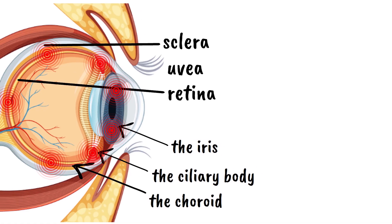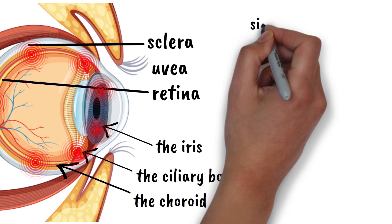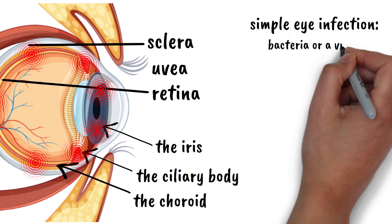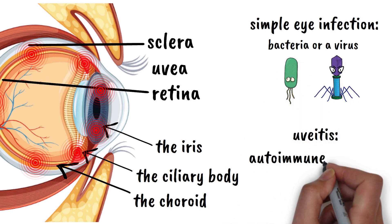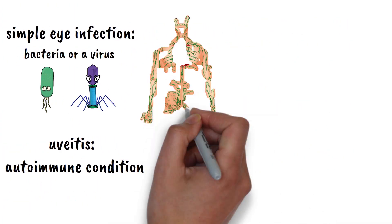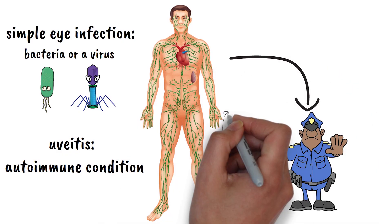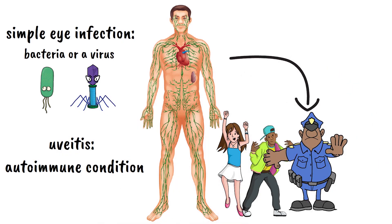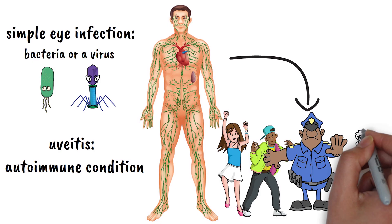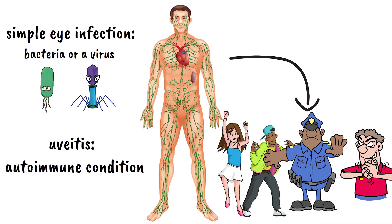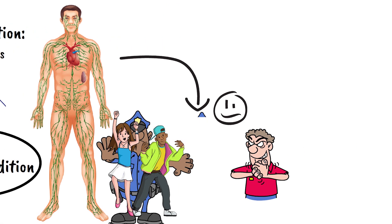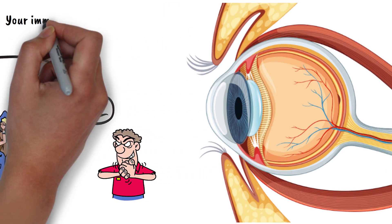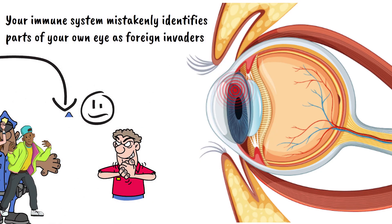Here's where uveitis gets particularly interesting and complex. Unlike a simple eye infection that might be caused by bacteria or a virus, uveitis is often what we call an autoimmune condition. Imagine your body's immune system as an overzealous security guard at a concert — normally doing a great job keeping troublemakers out, but sometimes getting confused and attacking the very people who belong there. That's what happens with autoimmune uveitis: your immune system mistakenly identifies parts of your own eye as foreign invaders and launches an attack against them.